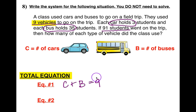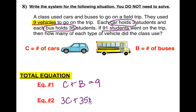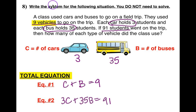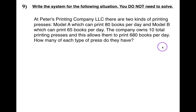First equation: C + B = 9, because there were nine vehicles total. Second equation: since each car holds three students and each bus holds 35, the total is 3C + 35B = 91. This is all you have to do — just write the system. Go ahead and try number nine on your own, writing the system without solving.